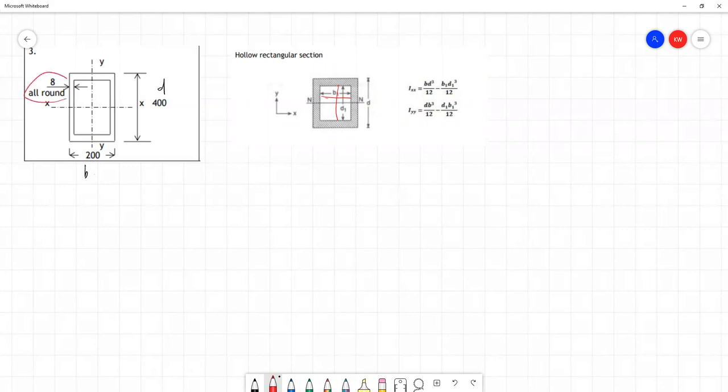We're told in the question it's 8 millimeters all round. So let's write down our values for b and d first: b is 200 millimeters and d is 400 millimeters. And so b1, this distance here, is going to be equal to 200 minus two times 8 because there are two sections of 8 millimeters, one on each side we have to remove, and that gives us 184 millimeters for b1.